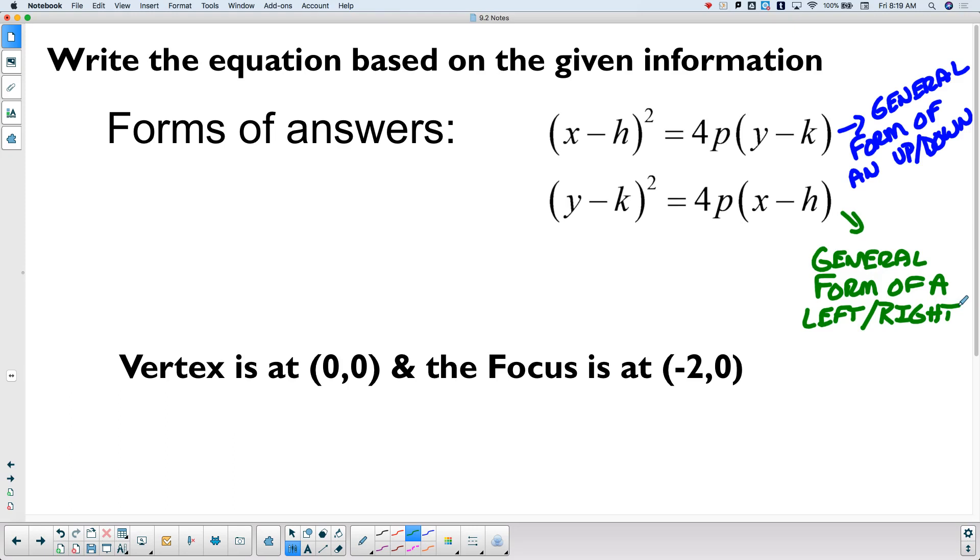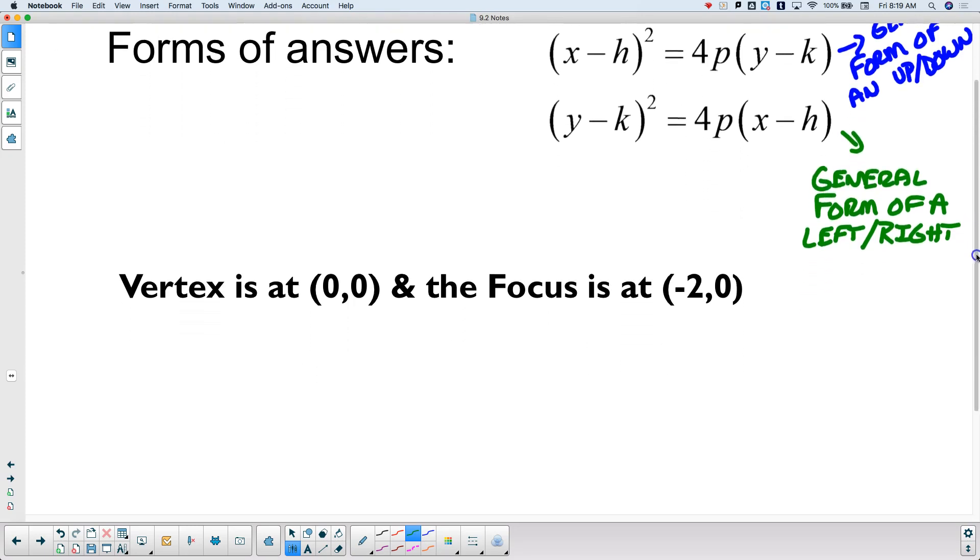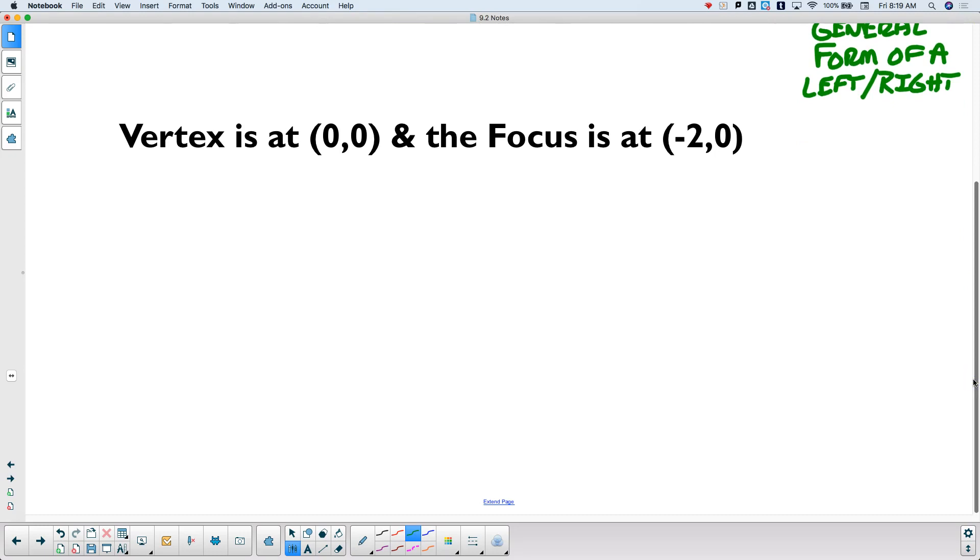So we're going to have two different kinds of answers today. We're going to have x minus h quantity squared equals 4p times the quantity y minus k as one of our answers. That's the general form of an up-down parabola. Or it's going to look like y minus k quantity squared equals 4p times the quantity x minus h, which is the general form of a left-right parabola. So, based upon the information that's given, and you'll be given two pieces of information, based upon that information, you will be able to determine which way the parabola opens. Because the focus is inside the parabola, and the directrix is outside the parabola, and the parabola never crosses the directrix. So you'll be able to figure out that kind of information.